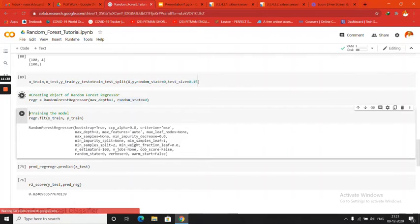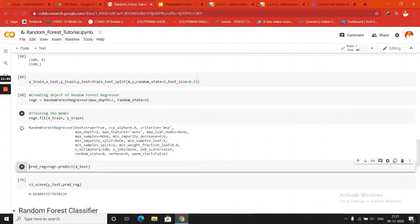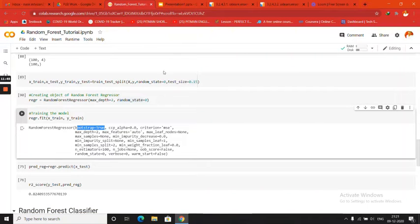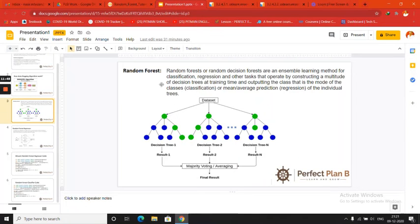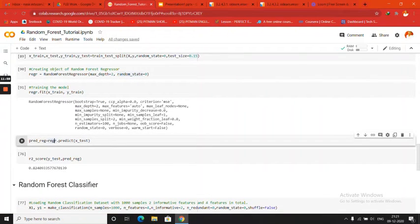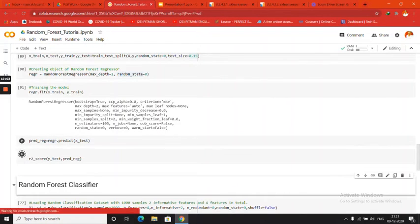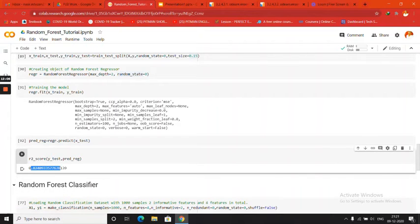So after running this code, now the fit function we all know, we are just training it. So X_train and Y_train. You can see that bootstrap equals to true, which basically means that we were doing bootstrapping. We were just bootstrapping our data, so it is by default true. Criterion mean squared error and all the features are set to default. Now we will be predicting our X_test which we have split. And we will check our accuracy. So our model is 82% accurate. It is not bad for a random dataset having two impure features.